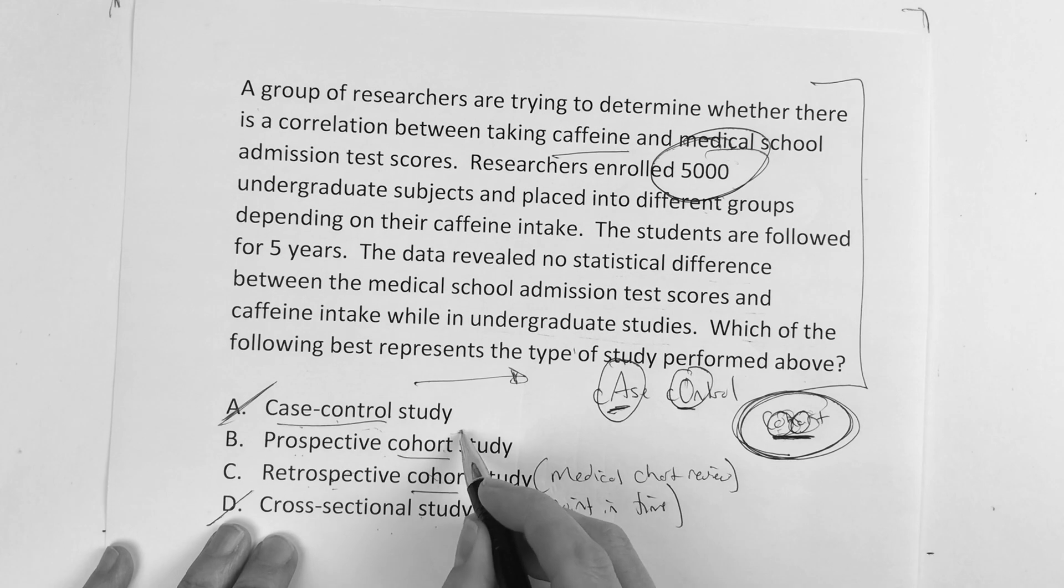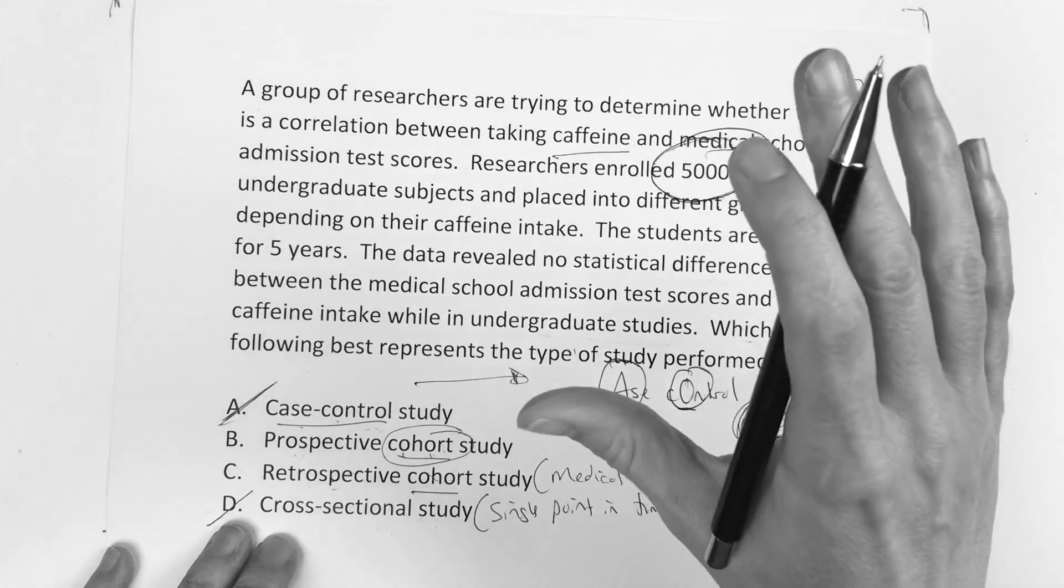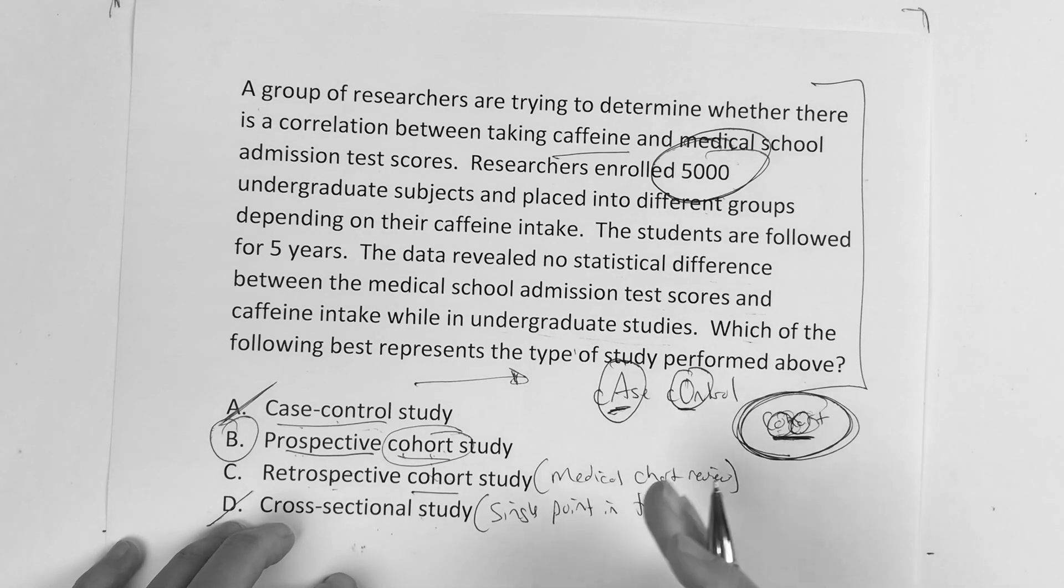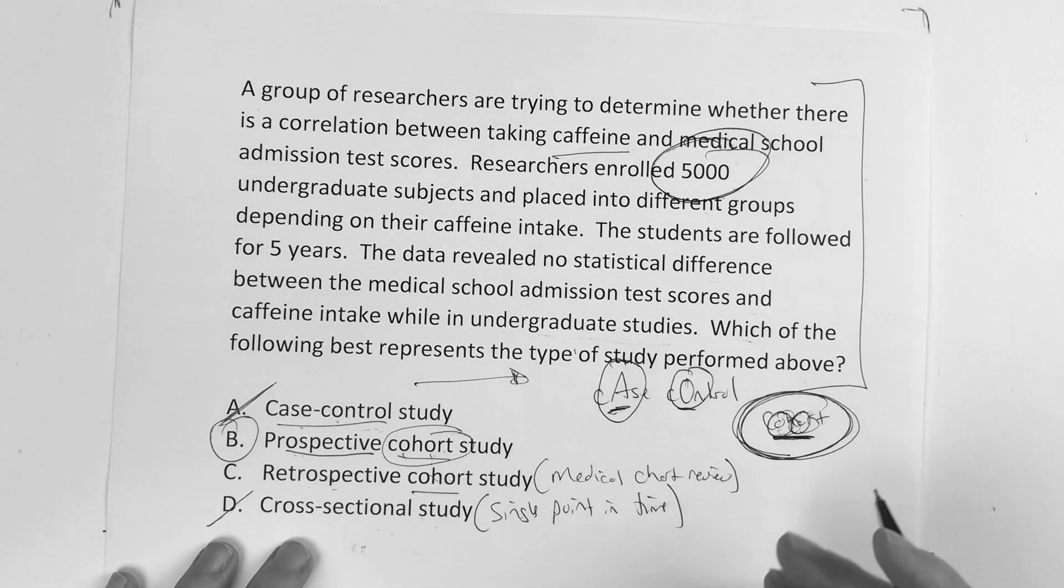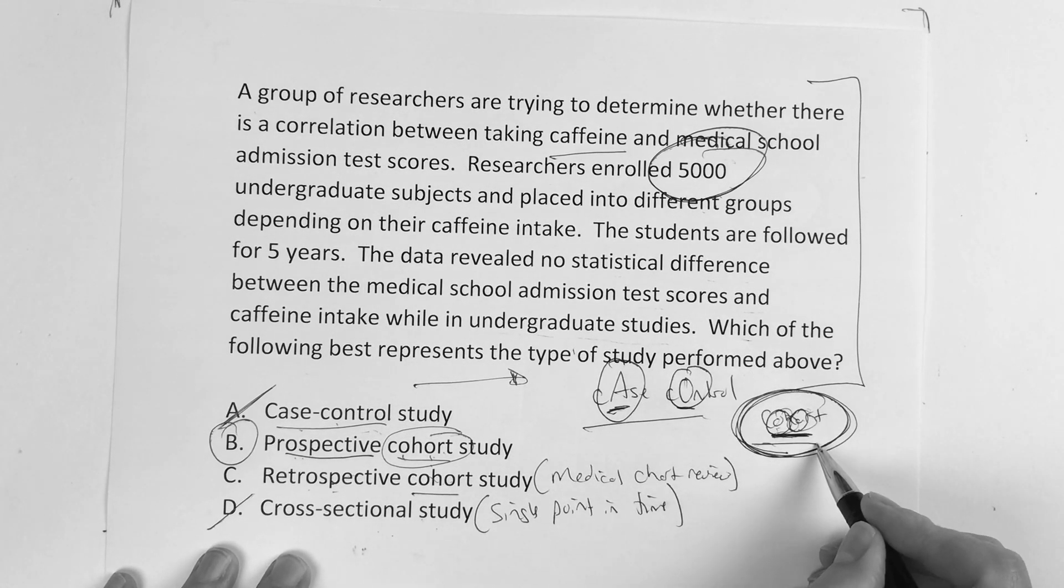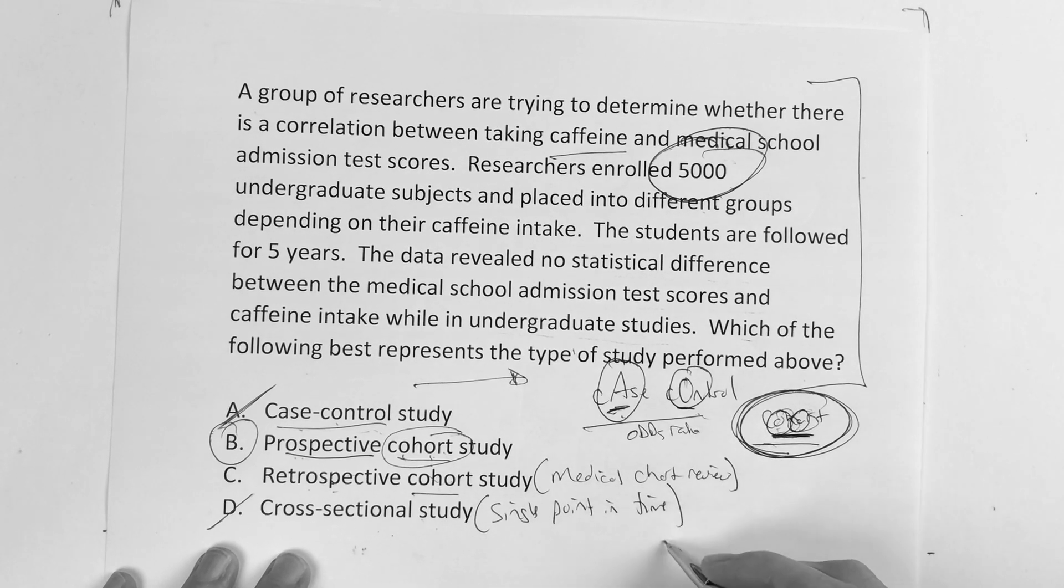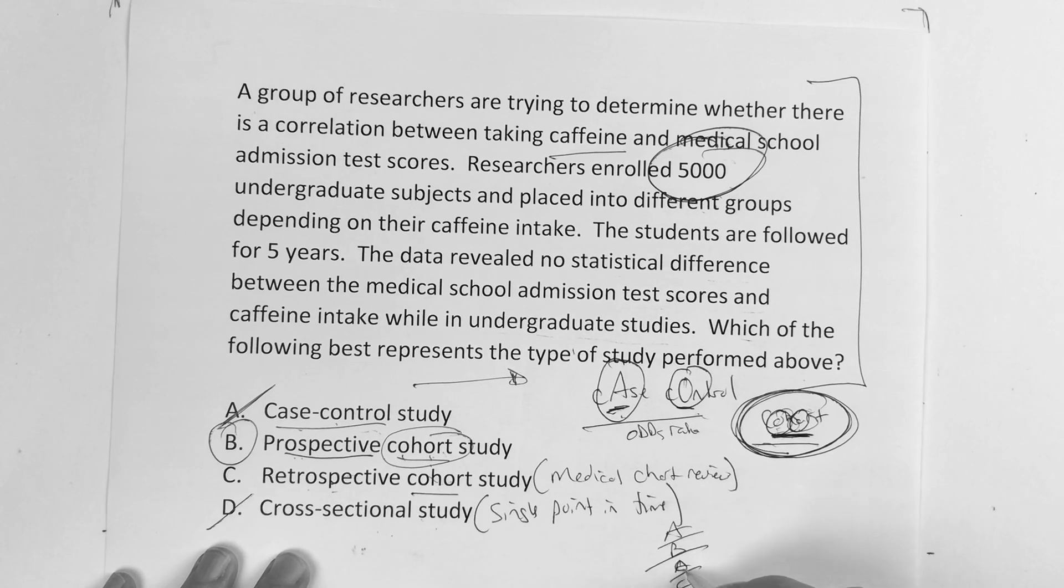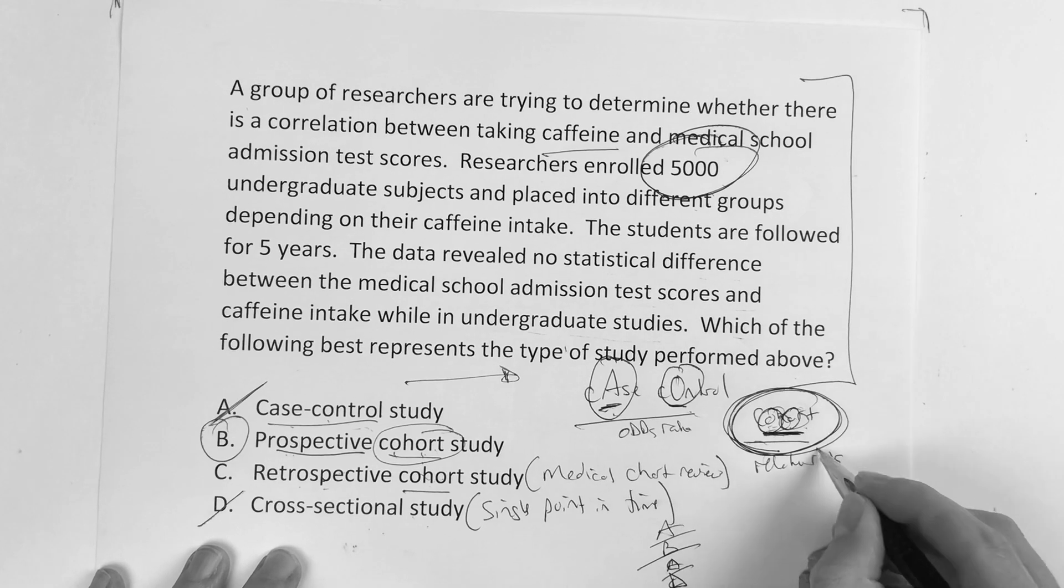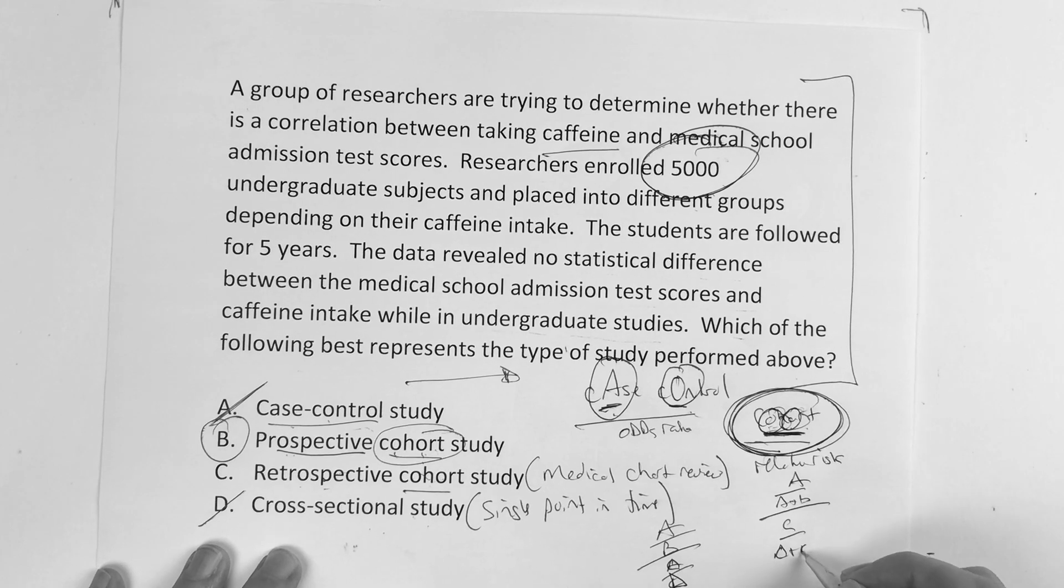So the correct answer is going to be cohort because nobody's in medical school at the beginning, nobody had the disease per se in this one. And it's prospective because it's future-focused on that. So again, know the difference between case control and cohort. Case control is associated with the word odds ratio, and you get the one number over one number, C over D. Cohort study is associated with relative risk, and that's one number over two. You should be saying that every time you say those words.